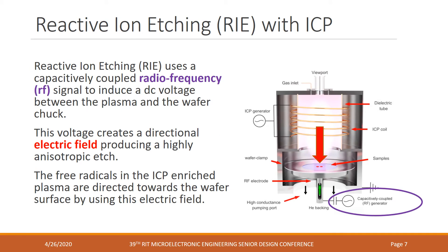Reactive ion etching, on the other hand, adds a capacitively coupled radio frequency, or RF, signal which produces a directional electrical field, producing a highly anisotropic etch. The created free radicals are accelerated towards the wafer surface, giving added direction to the etch.